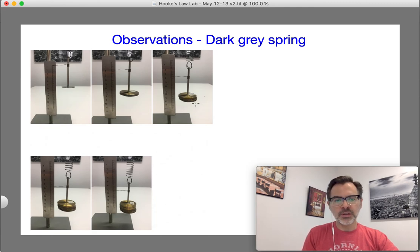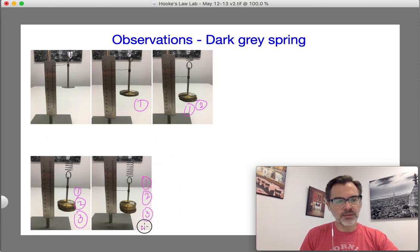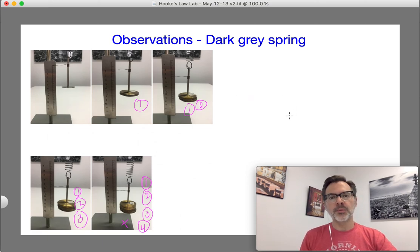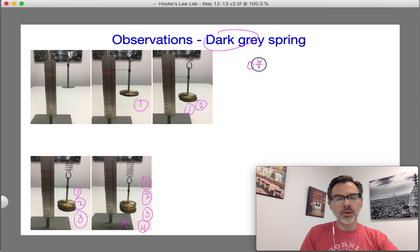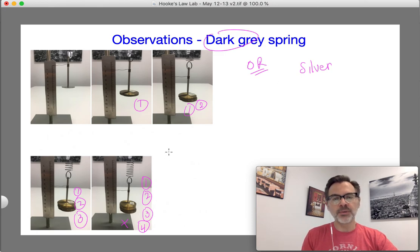Remember, the dark gray spring is not as stretchy. So I can actually go one, one and two, one two three, one two three and four masses before I hit the bottom again. When you're collecting data to hand in, I want you to do the dark gray spring or the silver spring. You don't have to hand in both, but I think you should measure both and go through the calculations to see the difference between a stretchy spring and a not so stretchy spring. But what you're handing in, you choose this or that. I'll tell you what is required to hand in in just a bit.